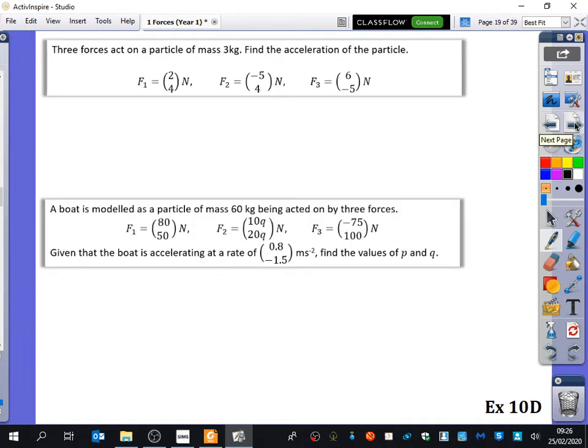So we've just got, it says here, three forces act on a particle of mass three kilograms. Find the acceleration of the particle. So the mass is three kilograms. I'm trying to find out what the acceleration is. Now we know our formula says F equals ma. But I've got three forces. What do I need to do with those three forces? Amina? Add them. Good. So first of all, I'm going to find out what my resultant force is,